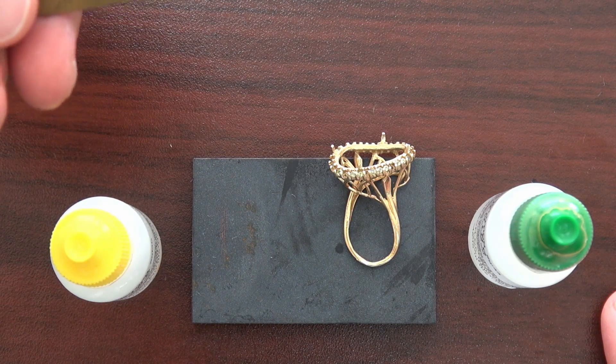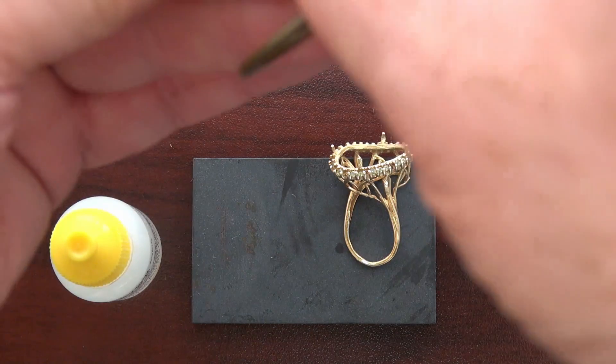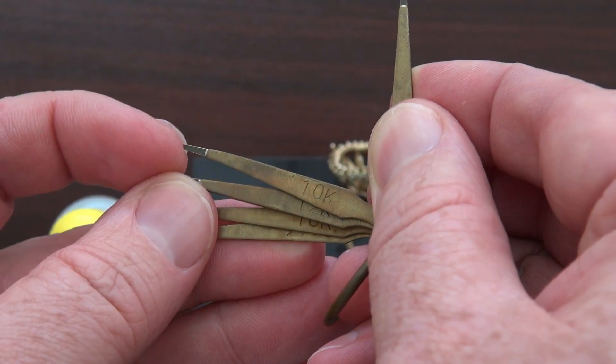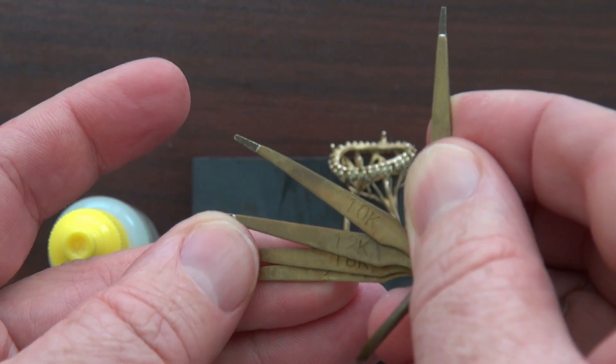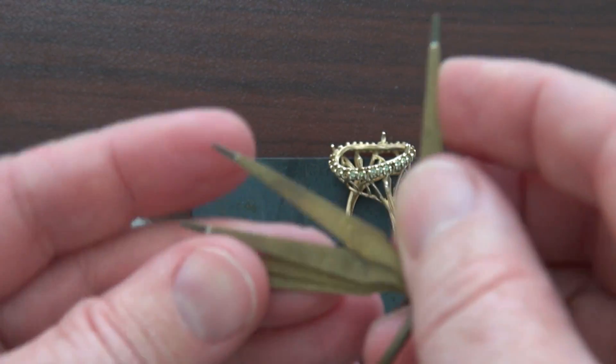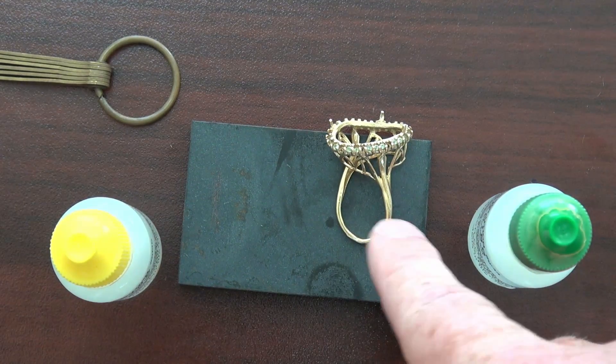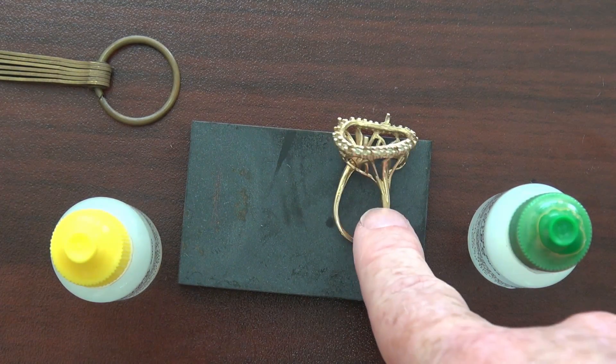We'll be using the 10k needle to compare to a known good 10 karat gold sample. So there's a little bit of 10 karat gold on here and you use it to compare your acid test samples. Then we have our testing stone right here and then the piece of jewelry we're going to test against the needle.